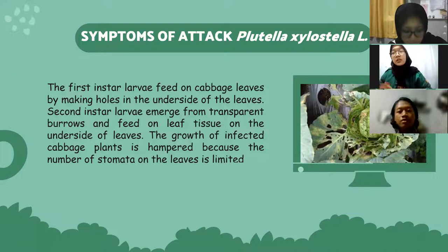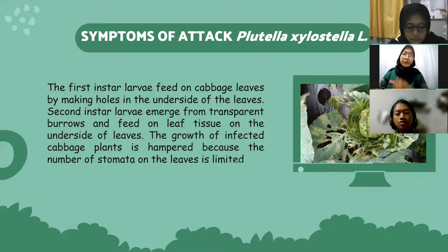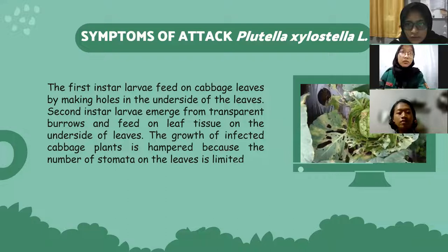Symptoms of attack by Plutella xylostella. In the first instar, larvae feed on cabbage leaves by making holes in the underside of the leaf. In the second instar, larvae emerge from transparent burrows and feed on leaf tissue on the underside of the leaf. The growth of infected cabbage plants is inhibited because the number of stomata on the leaf is limited.